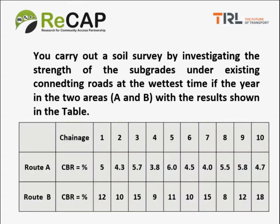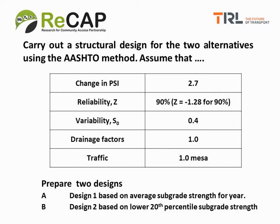A soil survey is carried out by investigating the strength of the subgrades under existing connecting roads at the wettest time of the year. This route has been there some time and there are other roads in the vicinity on the same subgrade. We have 10 readings for each route — Route A and Route B — with in-situ CBR measured along the alignment at 10 different chainages. For the AASHTO method, we have to define the change in present serviceability index, i.e., how much deterioration we can tolerate before we have to repair or rehabilitate the road. That is set to 2.7.